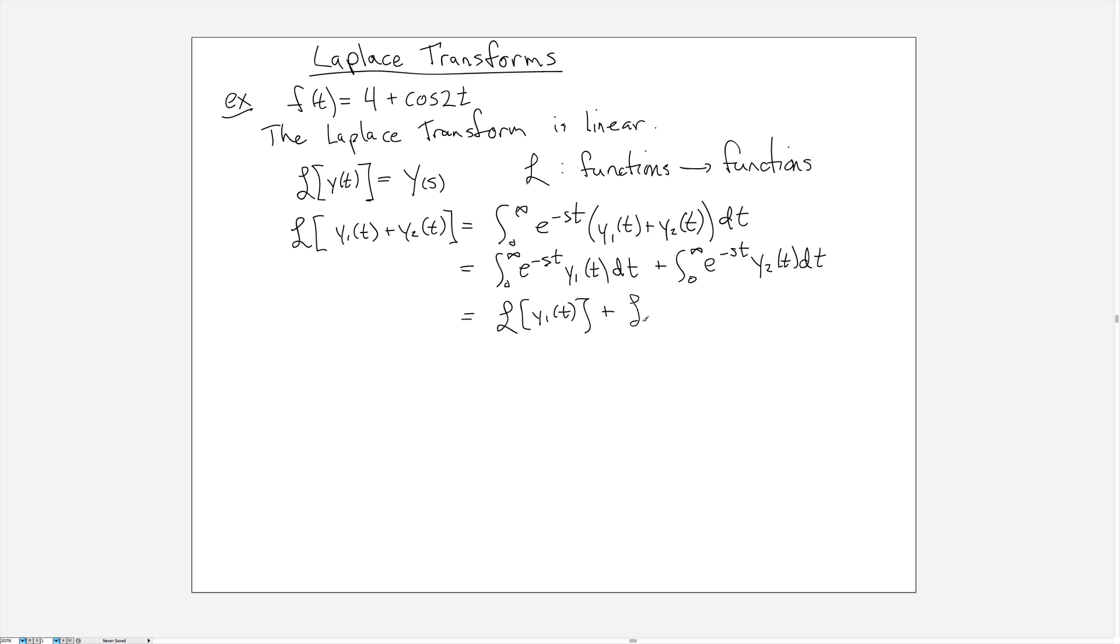That really just relied on the fact that when I have multiplication across the sum, I can multiply the e to the minus st by both of these. And when you're integrating the sum of two terms, as long as each of the pieces end up having well-defined integrals, you can separate an integral of a sum into the sum of the two integrals.